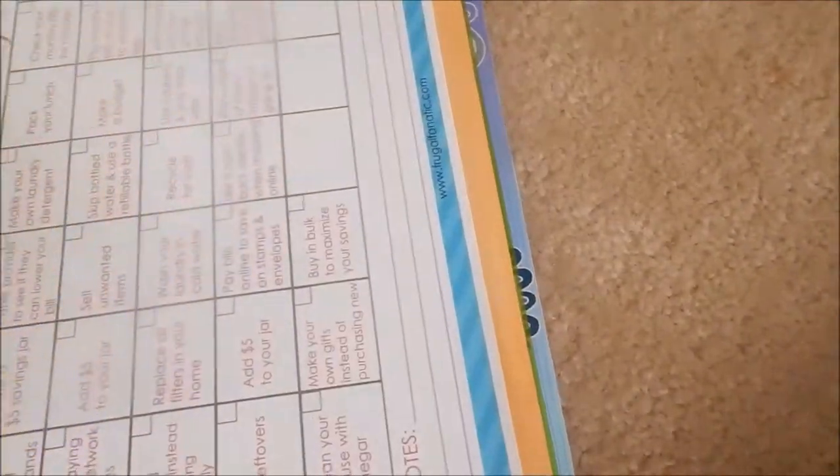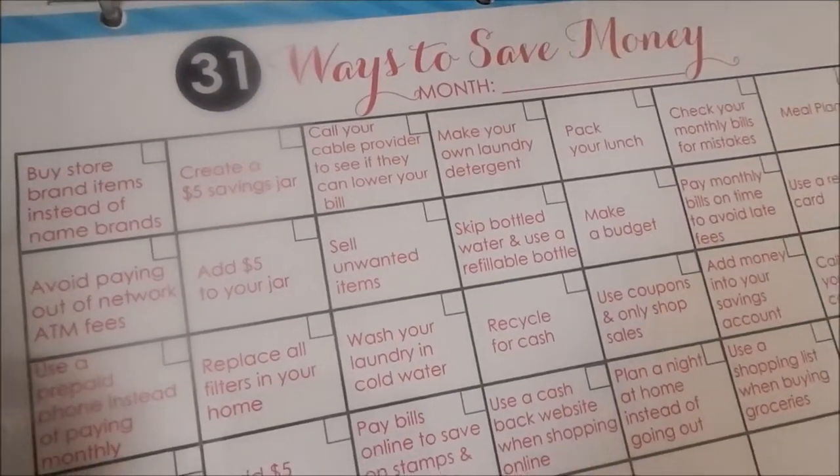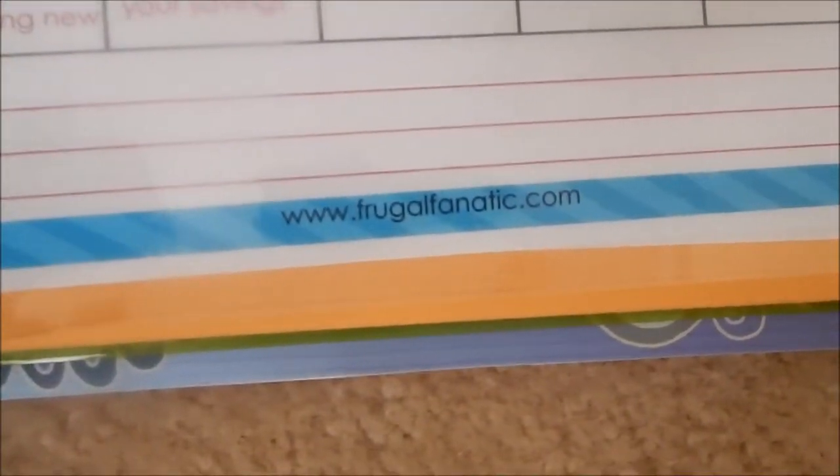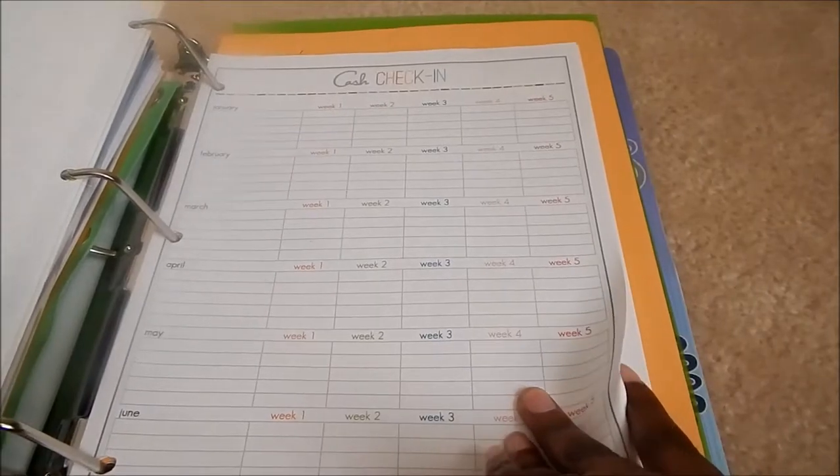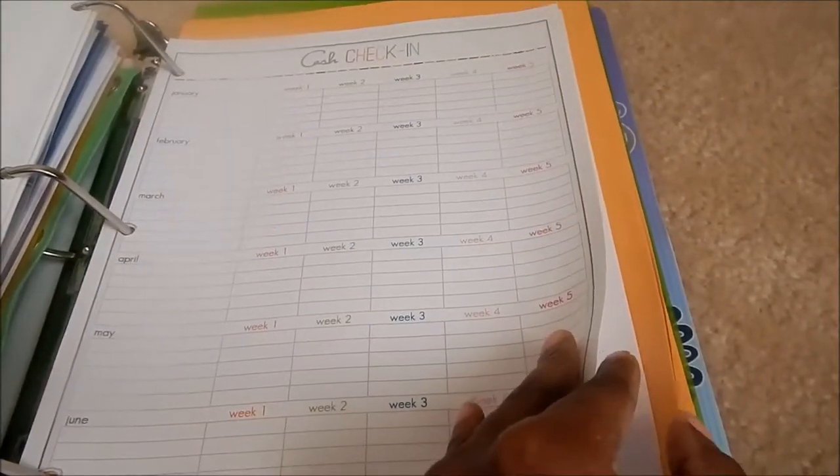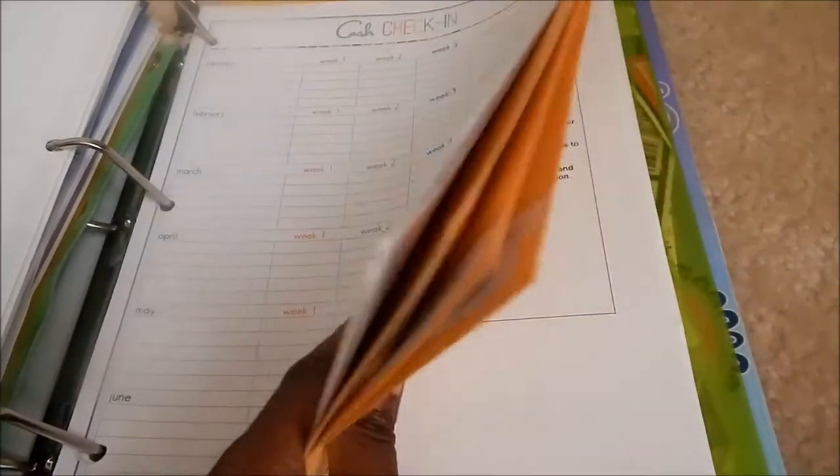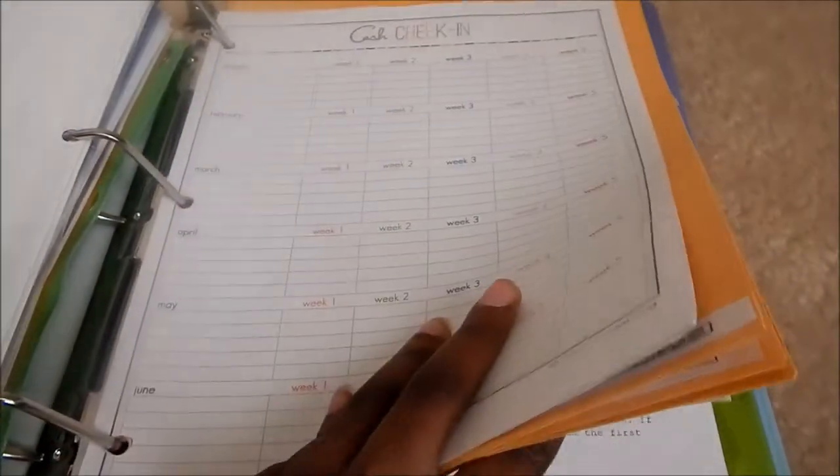Next is savings and emergencies. I have 31 ways to save money and cash check-in, which I need to do. These envelopes are different saving envelopes for different things that we need. I don't want to show you how much money we have in each envelope. We have some personal stuff back here I can't really show you.